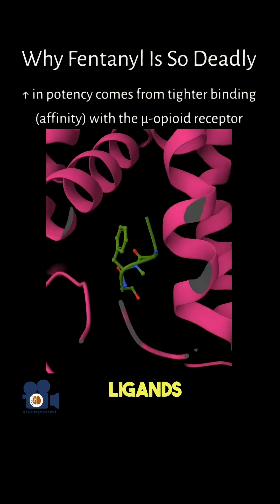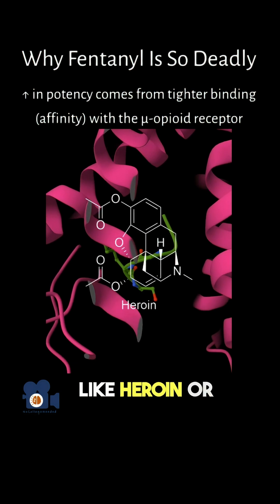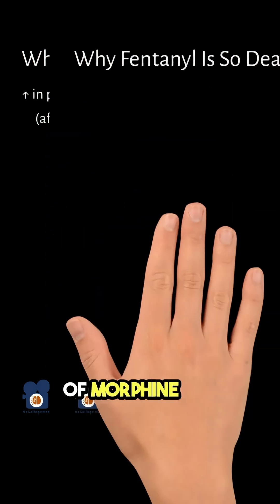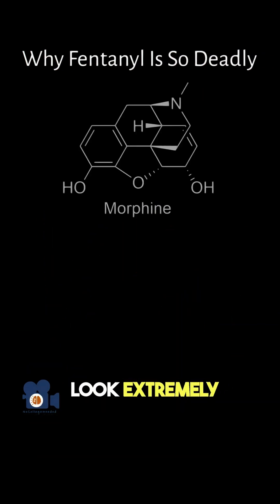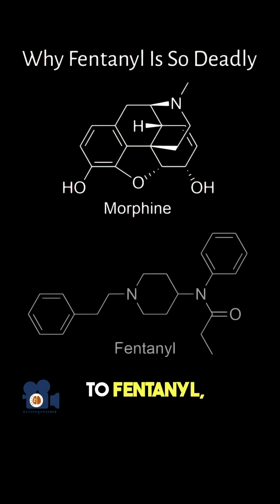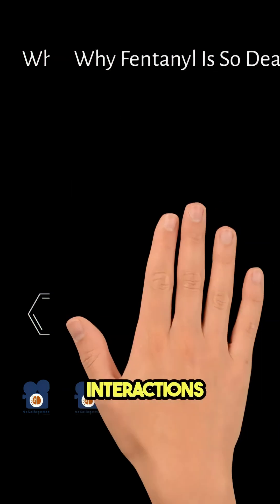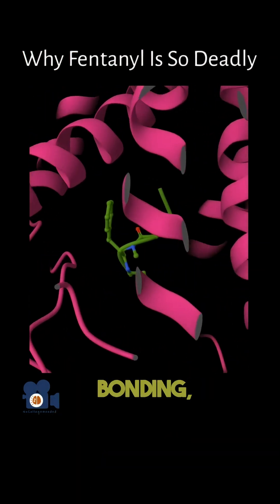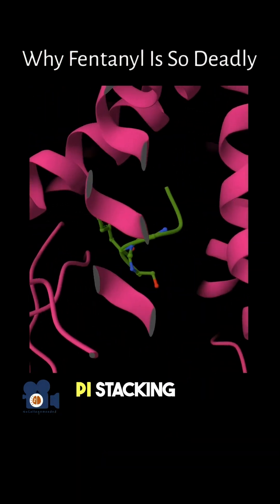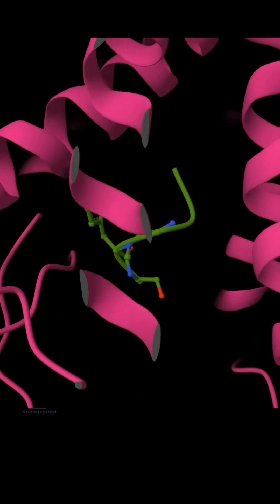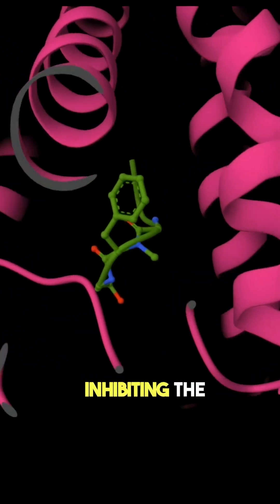Looking closer, this is where ligands like heroin or morphine bind. Now, while the molecular structure of morphine does not look extremely similar to fentanyl, biochemically fentanyl is still 50 to 100 times more potent because it binds so much tighter to the mu-receptor through interactions like hydrogen bonding, pi stacking, and Van der Waals forces, making it harder to come off, thereby inhibiting the receptor more.